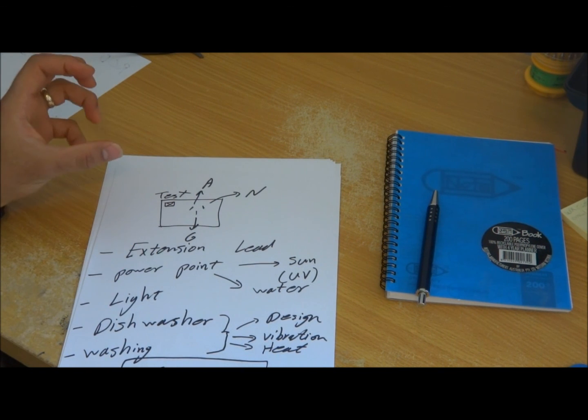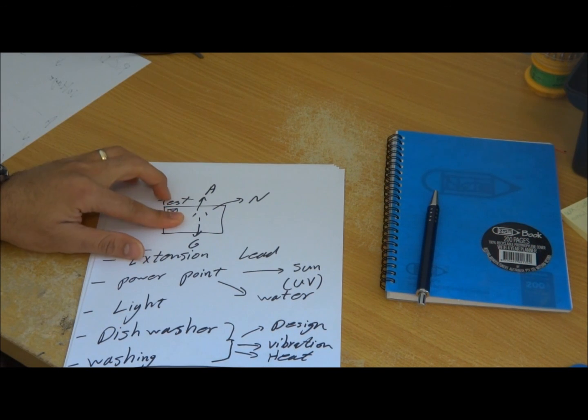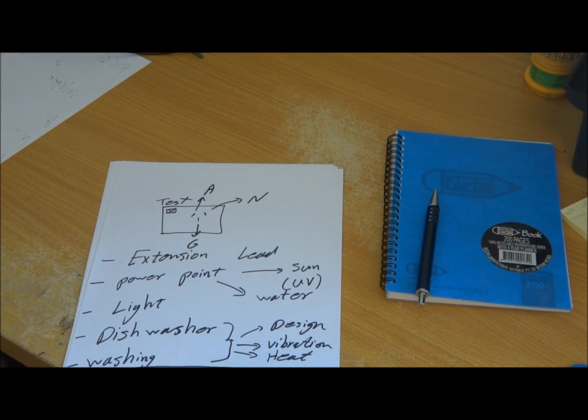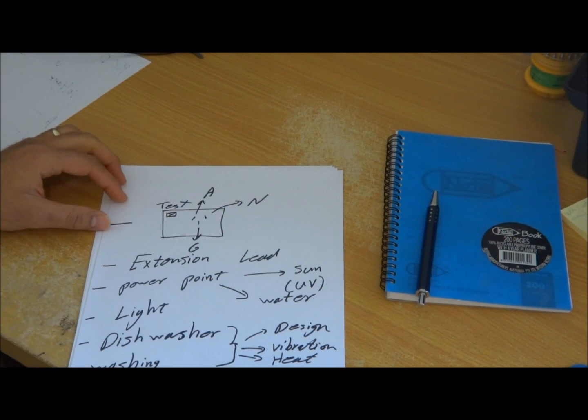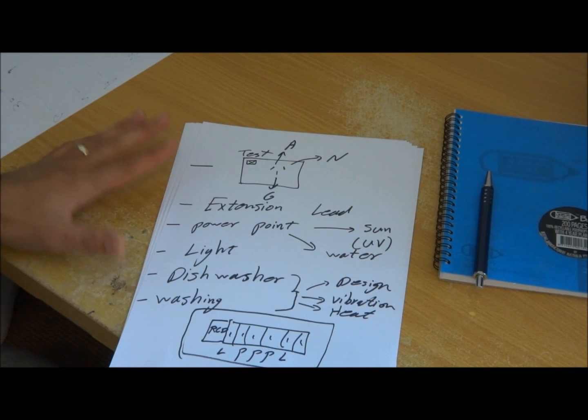There are some sort of RCD testers which you just plug it into the power points and it tests that point, will tell you it's healthy or not. You can use those if you have any of those handy. So that's another point I would recommend for you to do during the root cause analysis or narrowing down this issue.